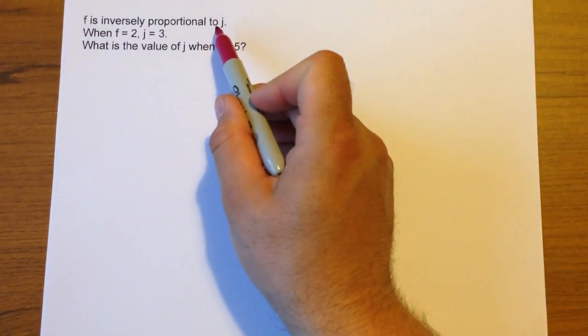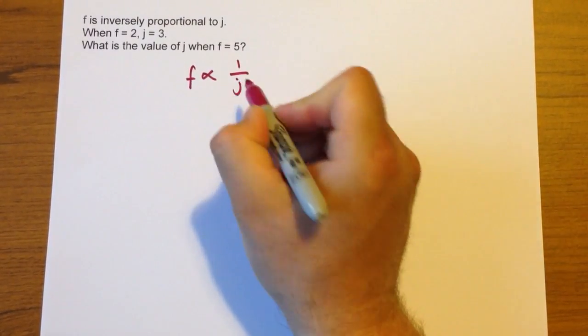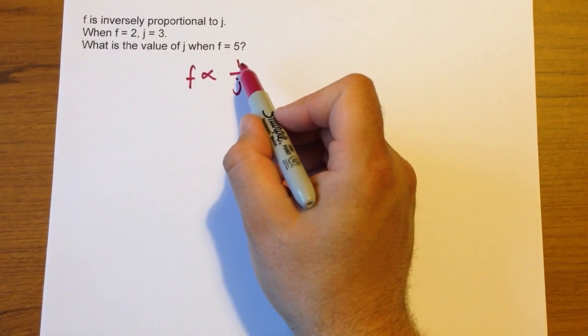Ok, here we're told f is inversely proportional to j. So the first thing we write is f is proportional to 1 over j, because that's what inversely proportional means.